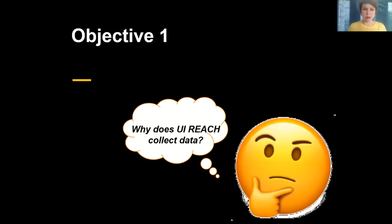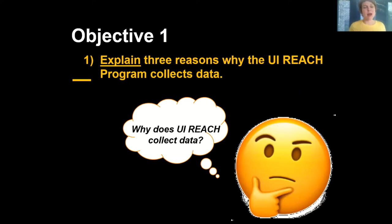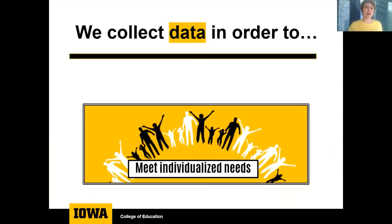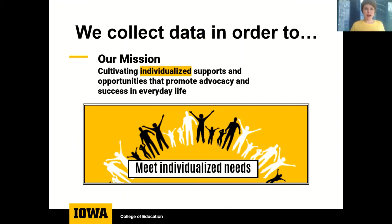Now that we've gone over the three objectives, let's go back to objective one: why does UI REACH collect data? We collect data in order to meet individualized needs. In fact, it is directly in our mission. Our UI REACH mission states that we are cultivating individualized supports and opportunities that promote advocacy and success in everyday life. Data helps us meet people's needs.